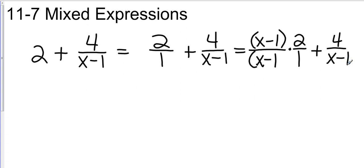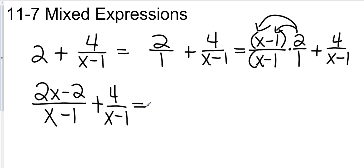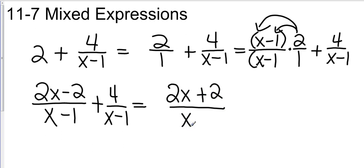So now we're going to do the distributive property. That's going to give us 2x minus 2 all over x minus 1. And then we're going to add 4 over x minus 1. Now that we have a common denominator, we just add the like terms on the top. There are no other x's, so that's just 2x. We do have a negative 2 and a positive 4.